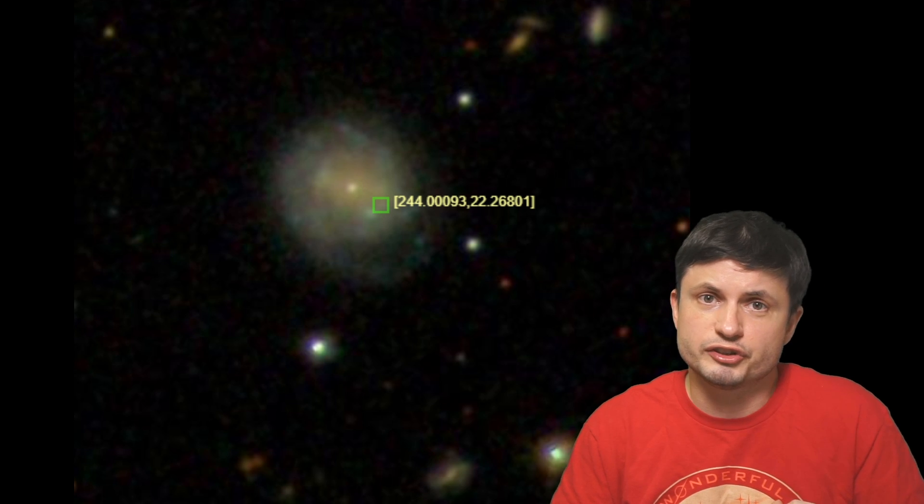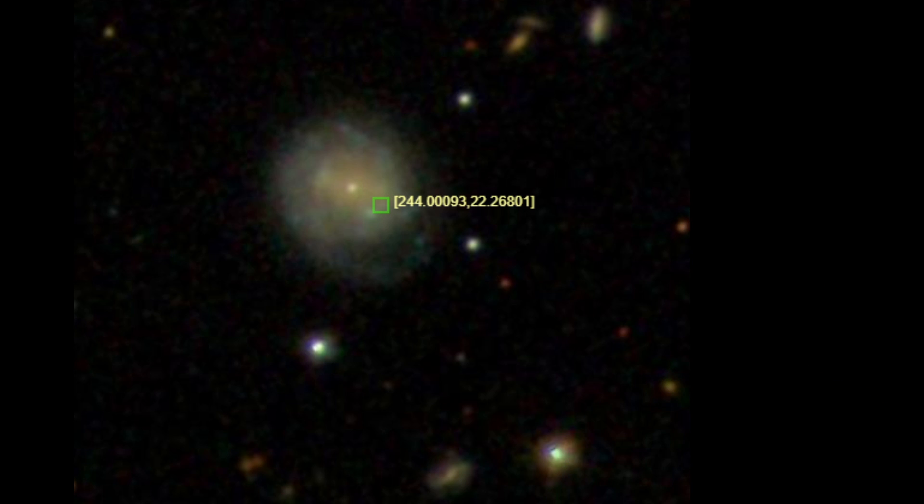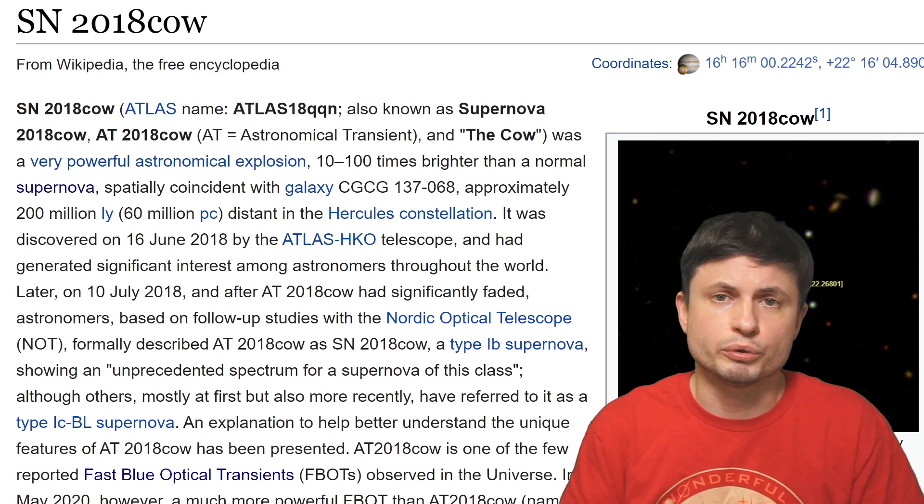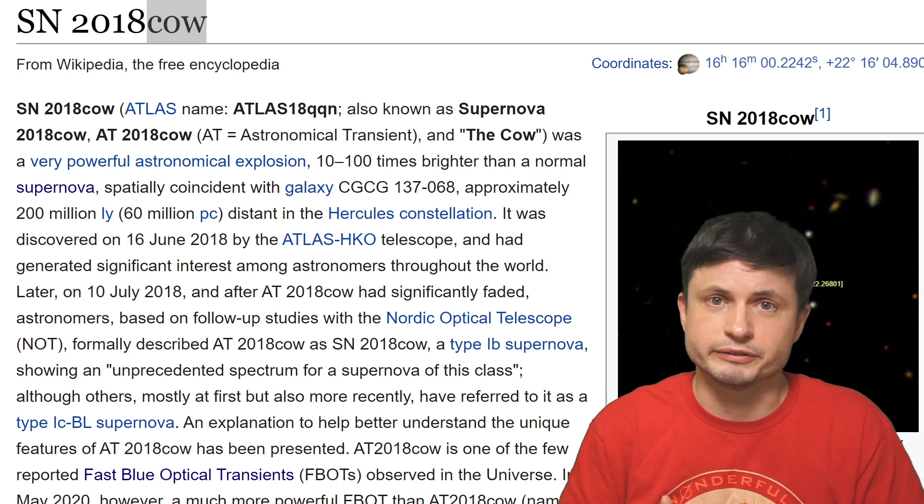With this right here being the best and most well-known example because this was the first such example. The unusual observation officially known as AT2018COW, or more commonly known in astronomy as the Cow, and mostly because of this. This by the way was completely procedurally generated and is basically just an accidental name.